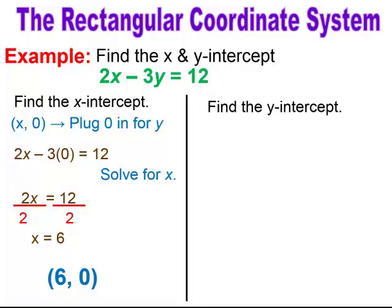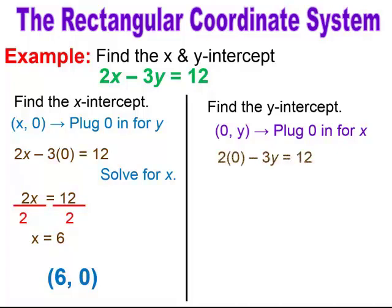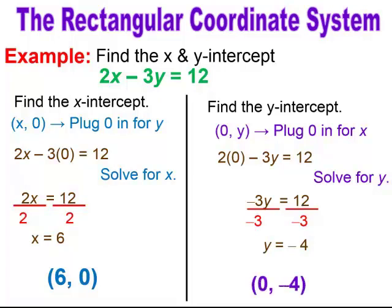For the Y-intercept, the X-value will be 0, and you find your Y-value. I plug in 0 for X in the equation and evaluate: 2 times 0 is 0, leaving negative 3Y equals 12. Dividing through by negative 3, I get Y equals negative 4. Just like the X-intercept, the Y-intercept needs to be written as an ordered pair. The X-value is 0, so you end up with (0, -4). These are the intercepts for 2X minus 3Y equals 12.